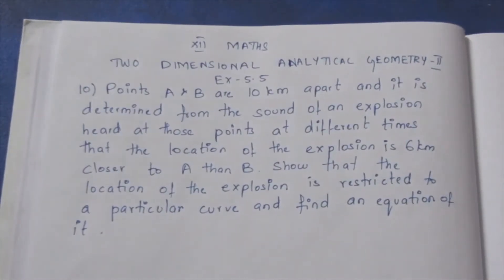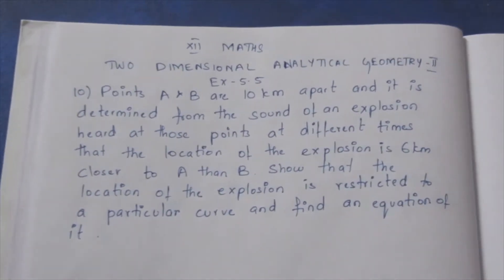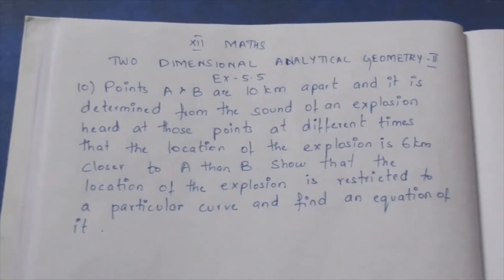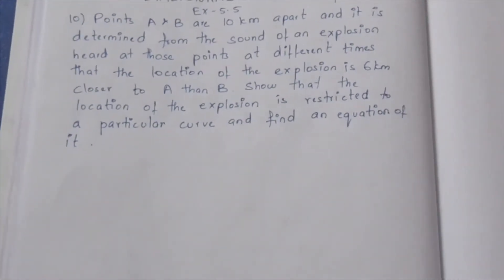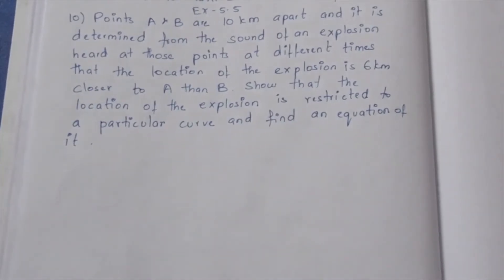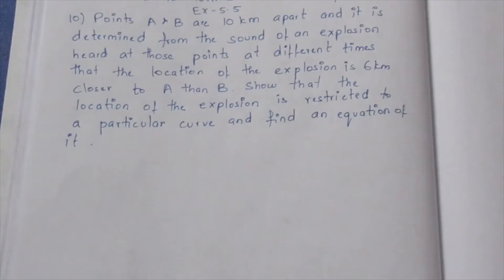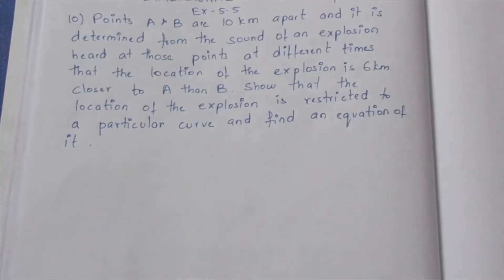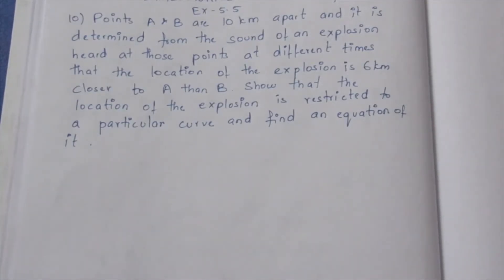Hello viewers, I am Aikli. In 12th maths, 2-dimensional analytical geometry 2, exercise 5.5, 10th sum. Points A and B are 10 km apart, and it is determined from the sound of an explosion heard at those points at a different time that the location of the explosion is 6 km closer to A than B. A and B are 10 km apart.